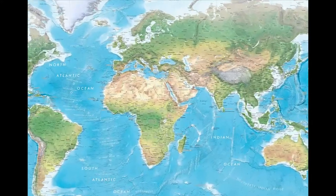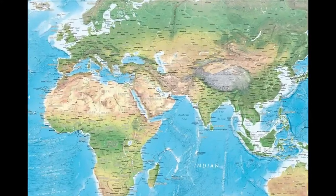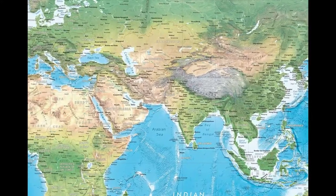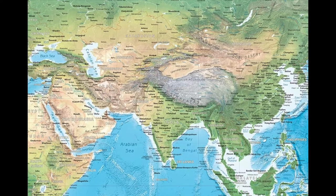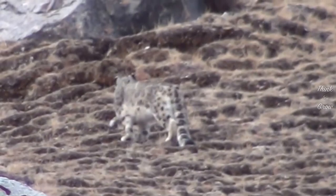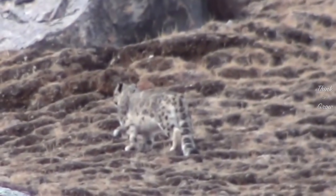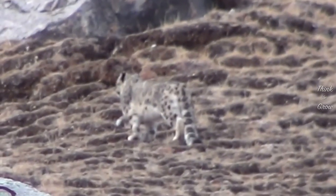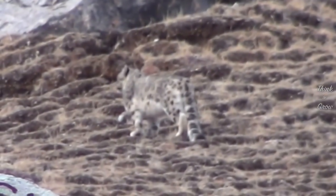The snow leopard is a large cat native to the mountain ranges of Central and South Asia. Snow leopards are found in 12 countries, including China, Bhutan, Nepal, India, Pakistan, Afghanistan, Russia, and Mongolia.